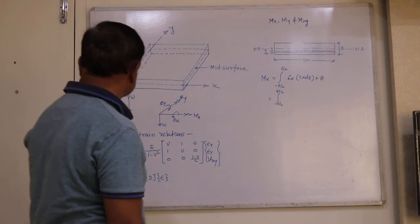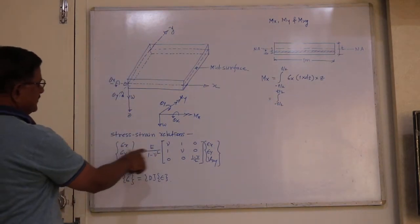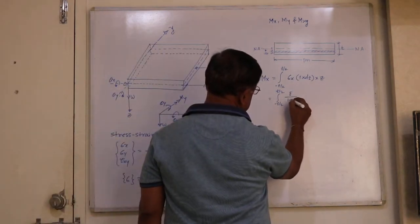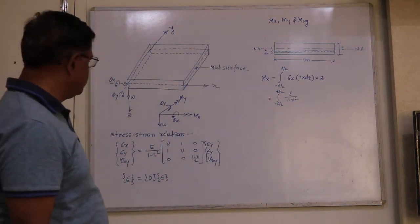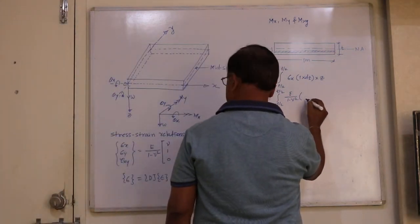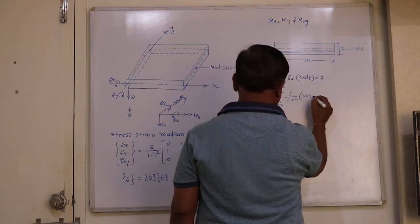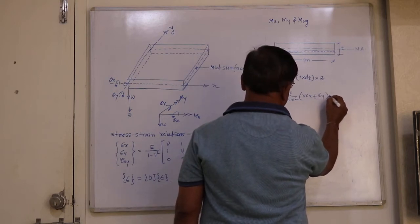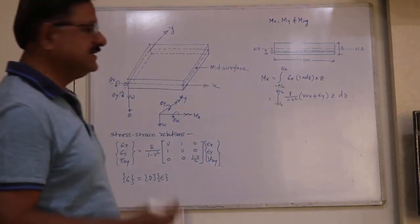Now let us substitute for sigma X from the stress-strain relationships. Sigma X equals E divided by (1 minus nu squared), into the bracket (epsilon X plus nu epsilon Y), multiplied by Z into DZ. Let us rearrange this expression with Z into DZ.